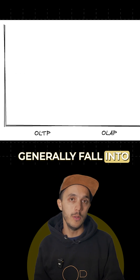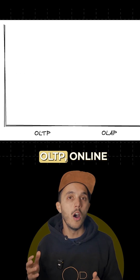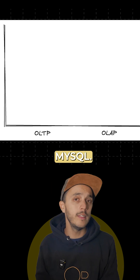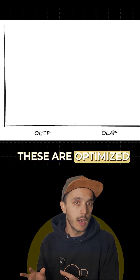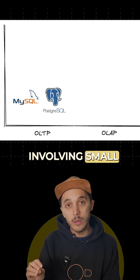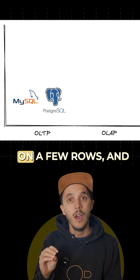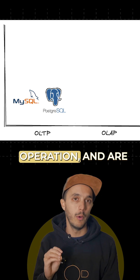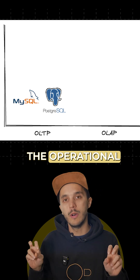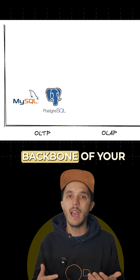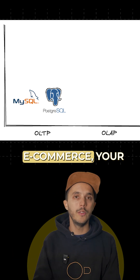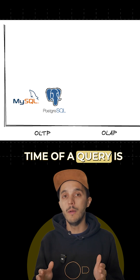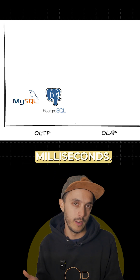Databases generally fall into two categories. OLTP, Online Transaction Processing — databases like Postgres and MySQL — are optimized for handling transactions involving small updates or queries on a few rows. They are ideal for fast, frequent operations and are often referred to as operational databases: the backbone of your e-commerce, your banking system, or whatever application you have. Query time is typically between 1 to 10 milliseconds.